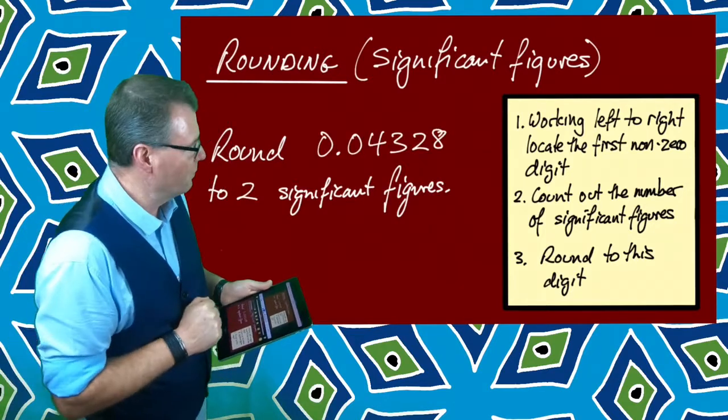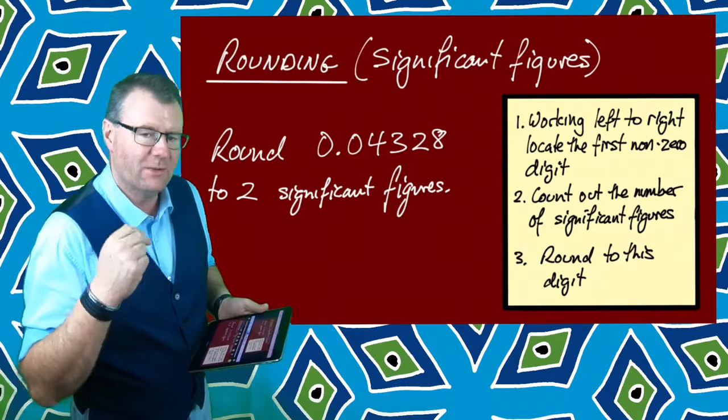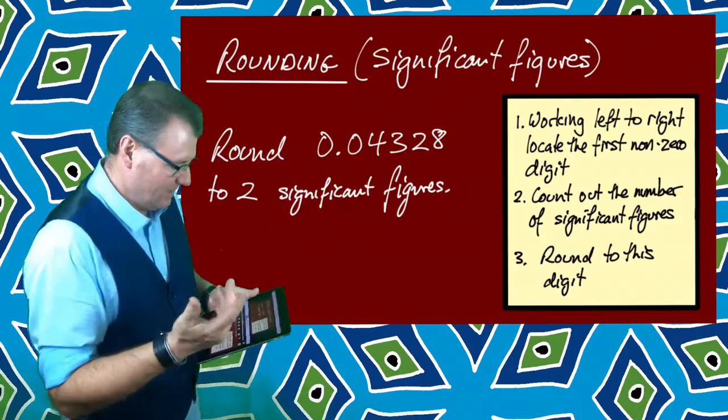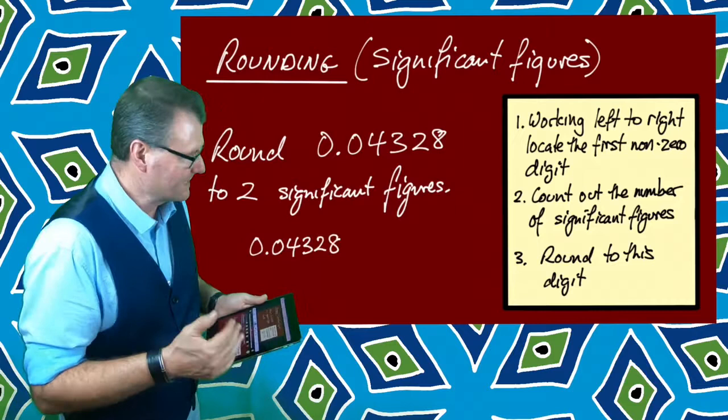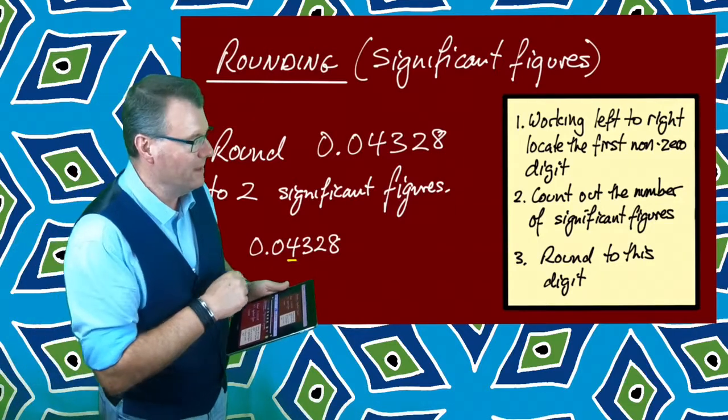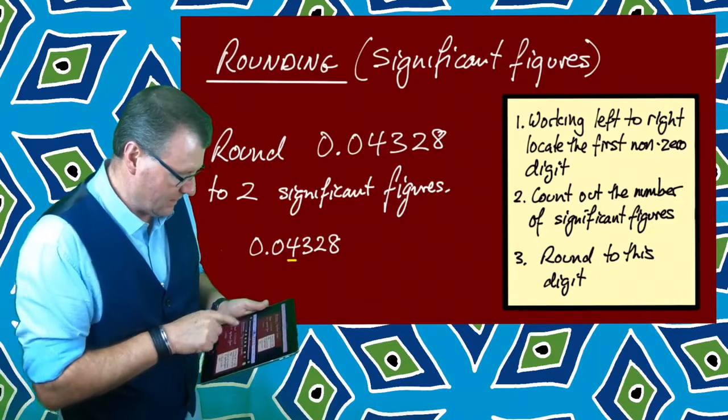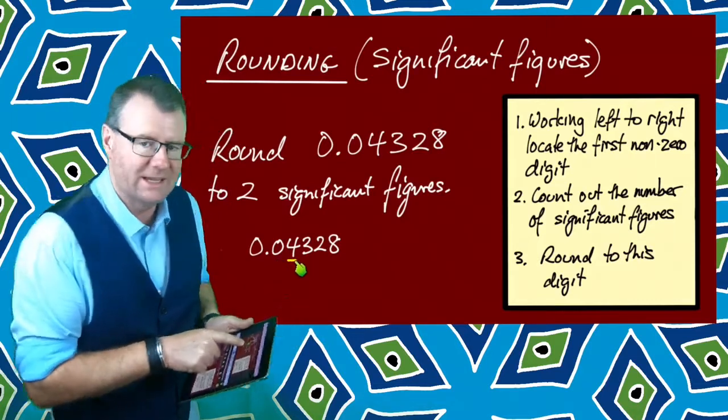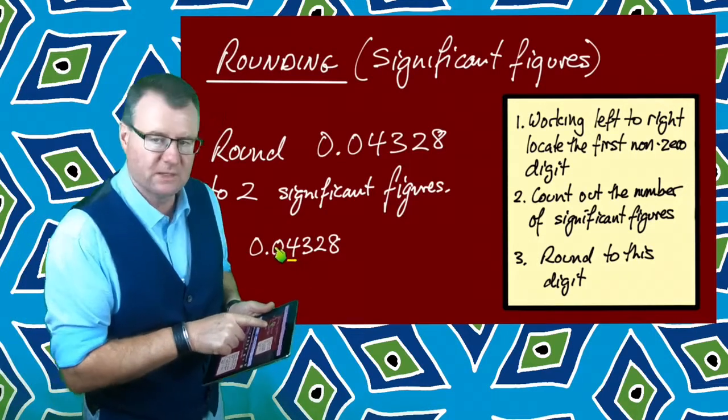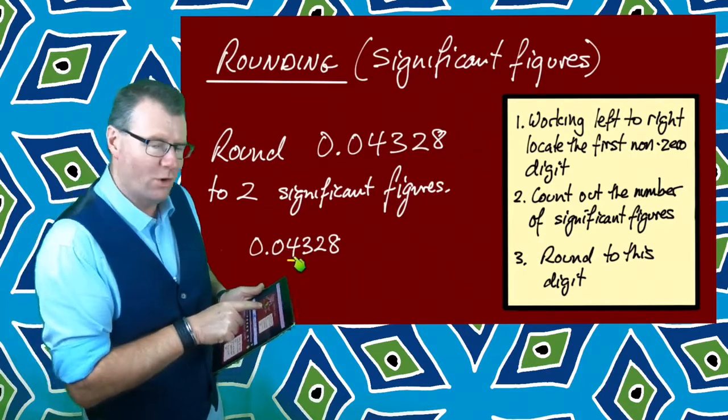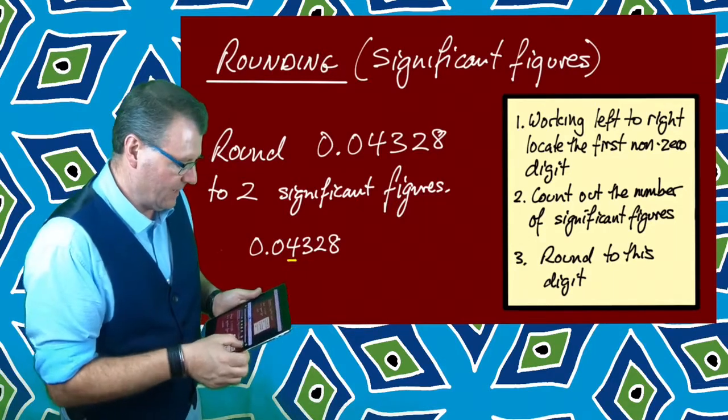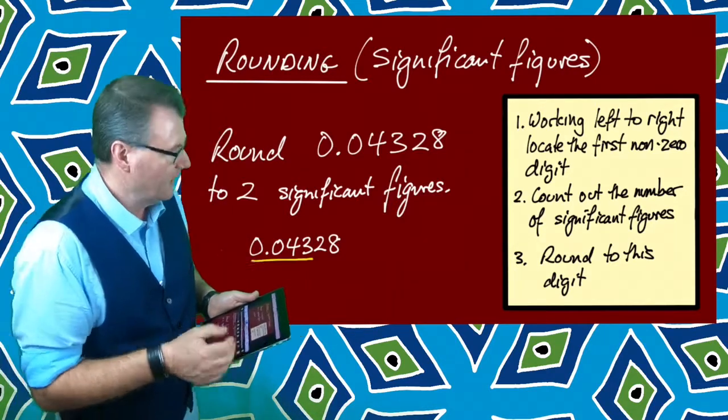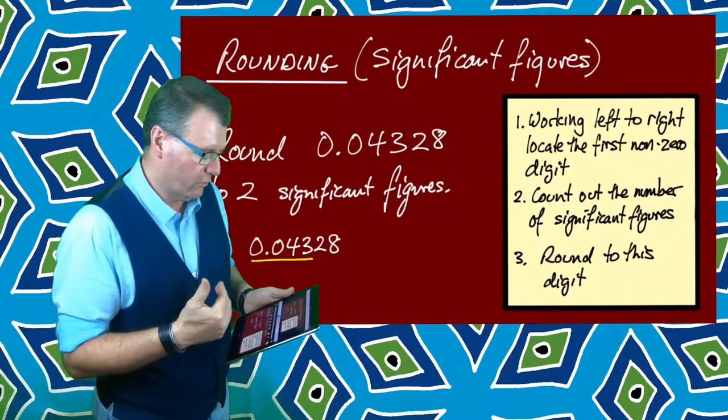What about this one? 0.04328, this time round it off to two significant figures. I'm going to follow the same process. I start from the left and come in until I hit the first number that's not a zero. In this case it's this one. I ignore these because they're zeros. The first non-zero digit. Then I count out my two significant figures and it's going to be 0.043.